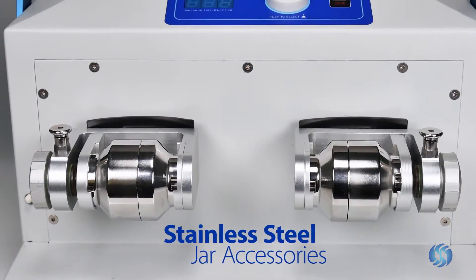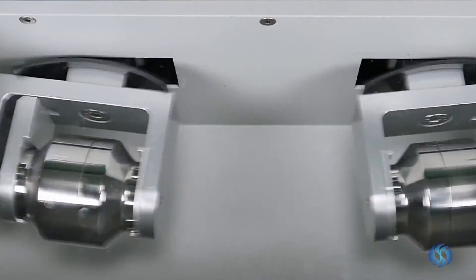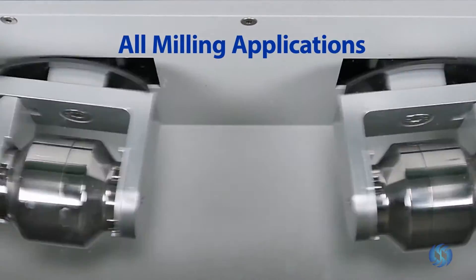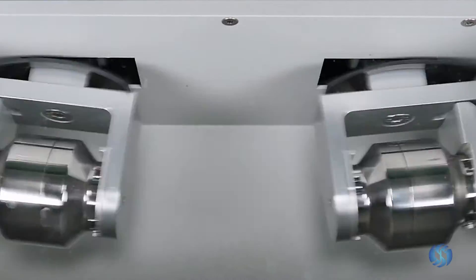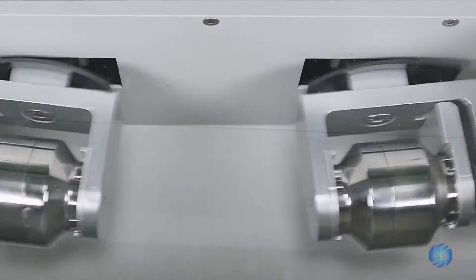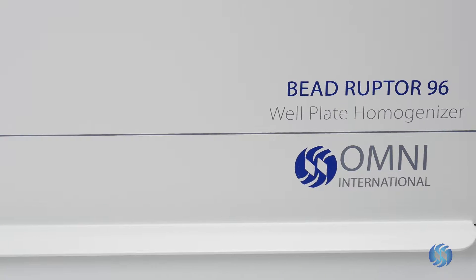When equipped with stainless steel jar accessories, the Beadruptor 96 is able to perform all milling applications including dry grinding of grains, powder particle size reduction, dissociation of plastics, plants, seeds, paper products, and drugs.